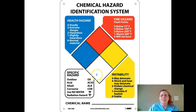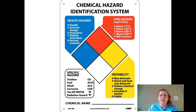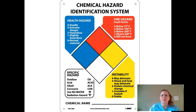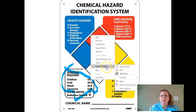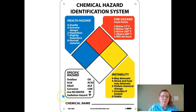Next is the chemical hazard identification system — it's a diamond with four colors. Blue is health hazard. Blue, red, and yellow are each rated from zero to four, with four meaning most hazardous and zero meaning no danger. The white section is the part we need to focus on — that contains specific hazards.